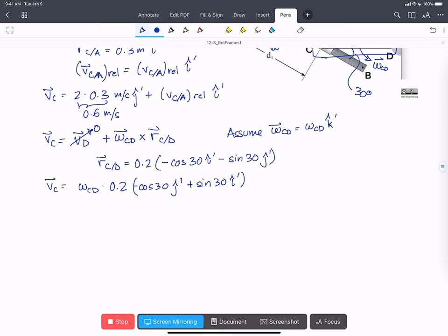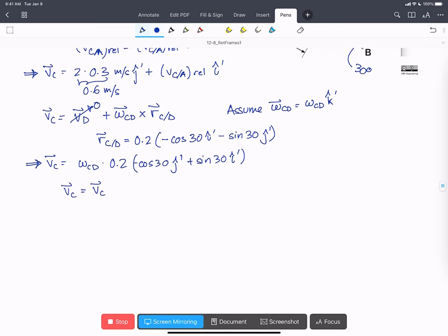Okay, now we've got these two equations for v C, and we can set them equal to each other. So we've got, and then we're going to look at the components of each. So in i-hat prime, we've got that v C with respect to A relative equals 0.2 omega CD sin 30.